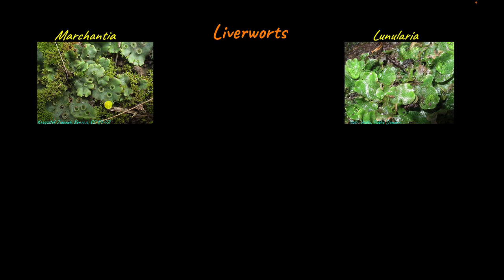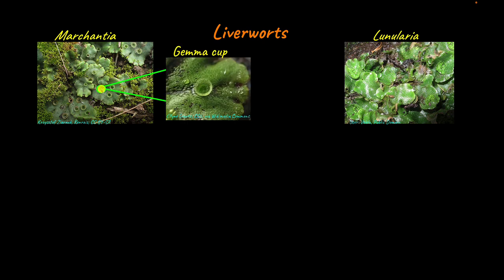Liverworts reproduce asexually by fragmentation or through structures called gemma cups. These circular structures are the gemma cups, and if we zoom in, the gemma cups contain asexual multicellular buds called gemmae inside them. When the gemma cup detaches from the thallus, the gemmae inside develop and form a new plant.